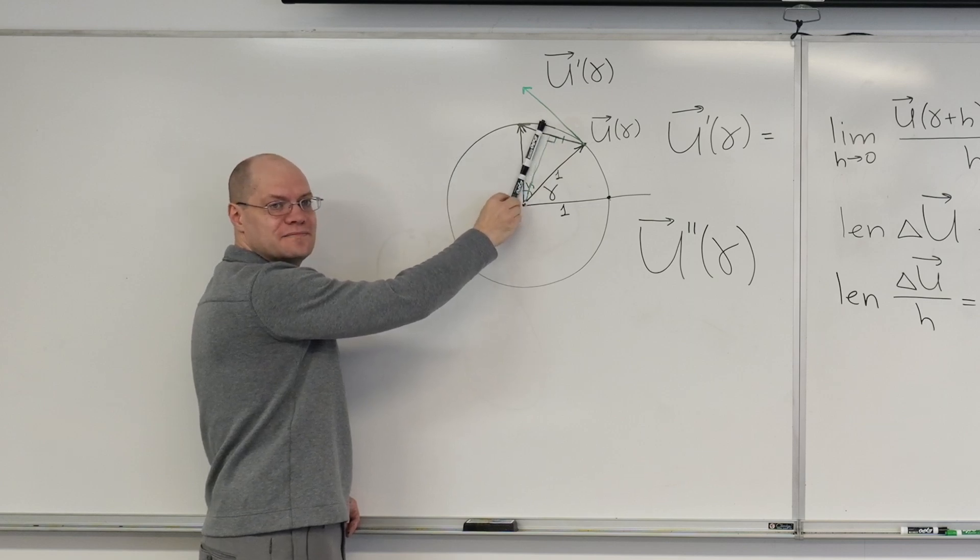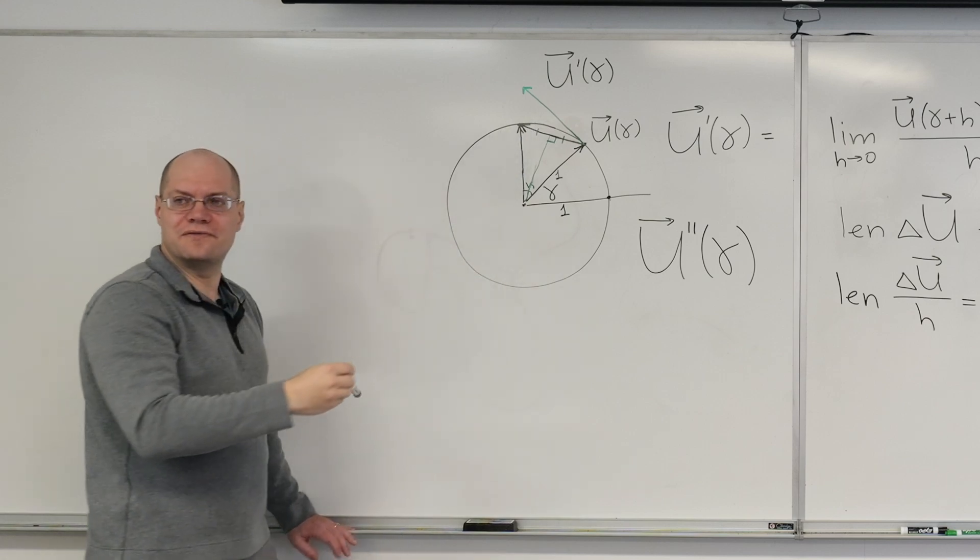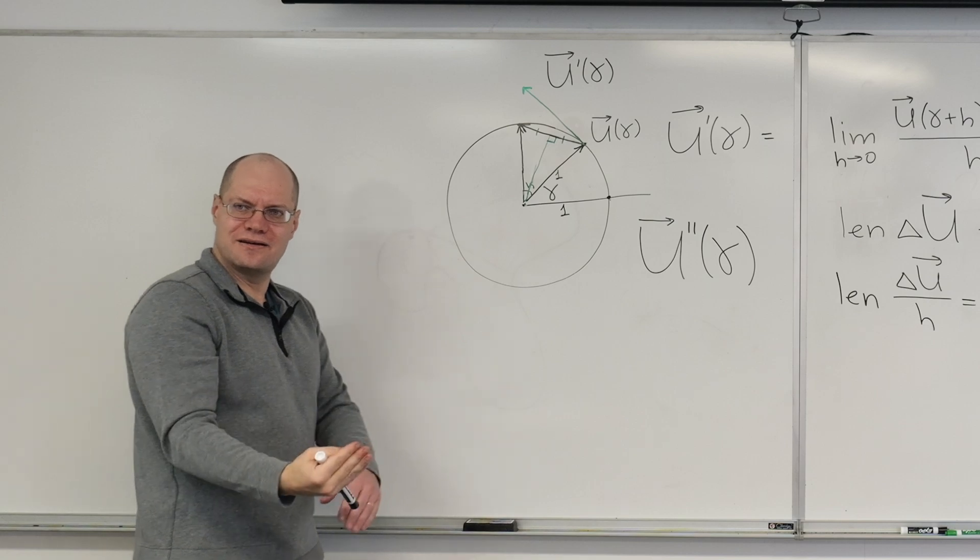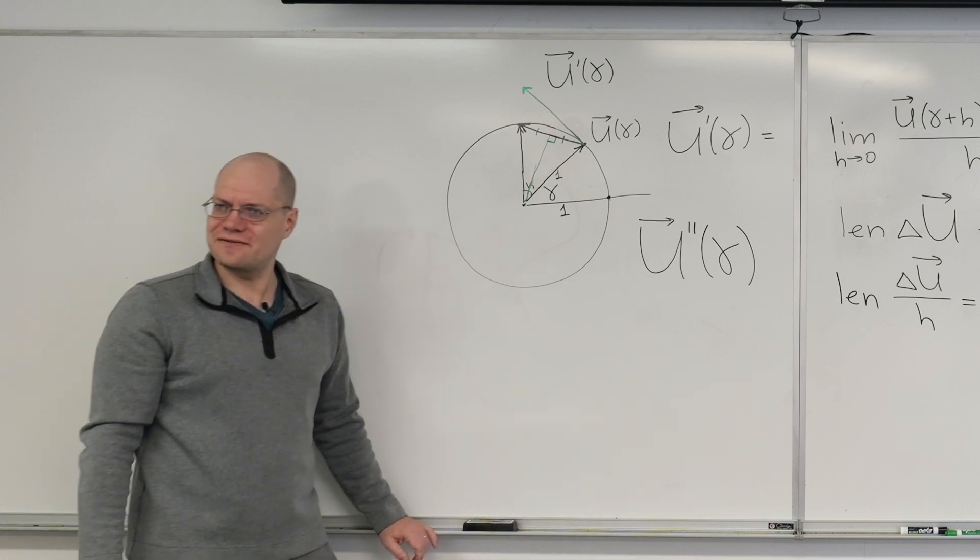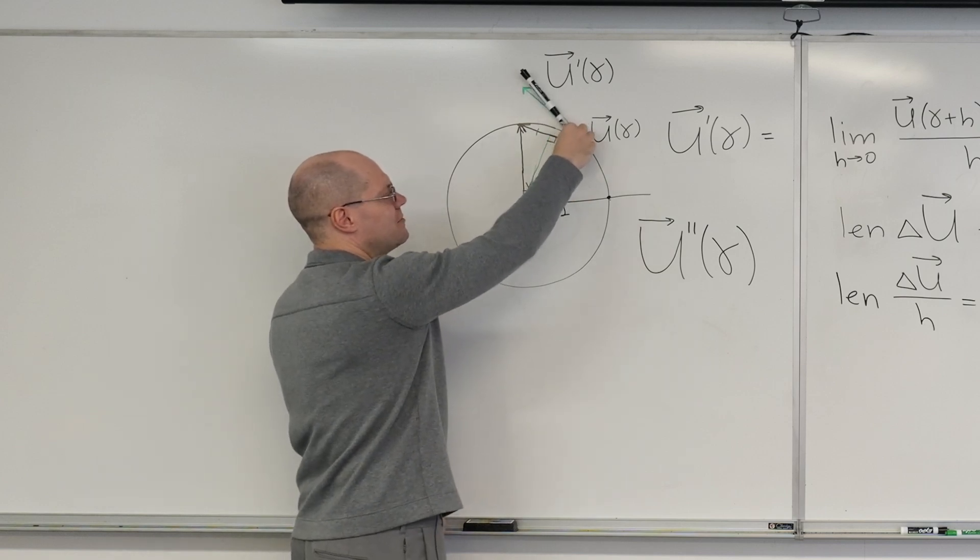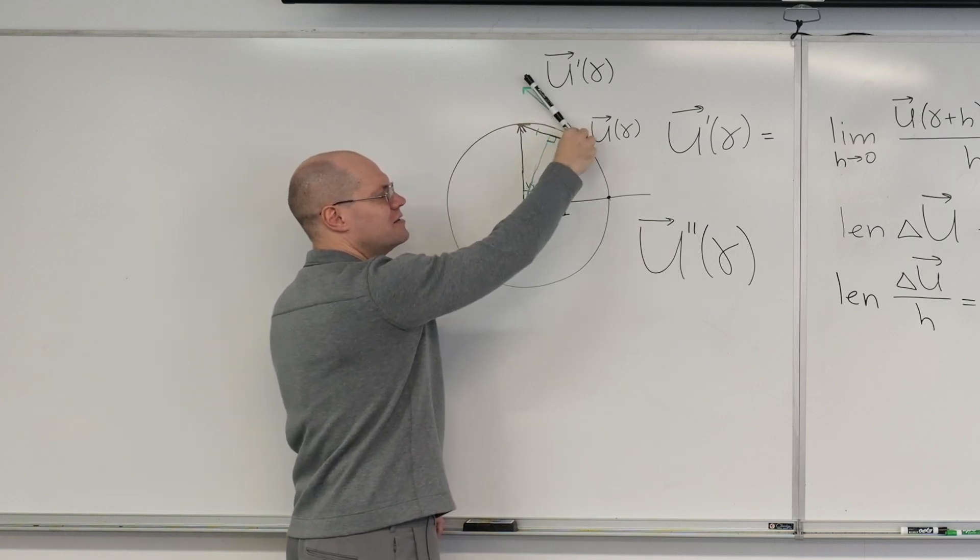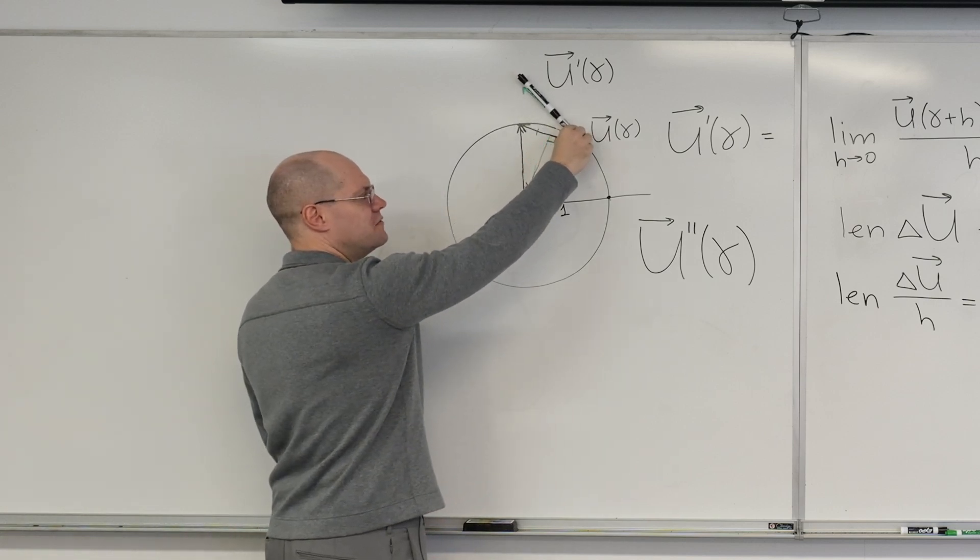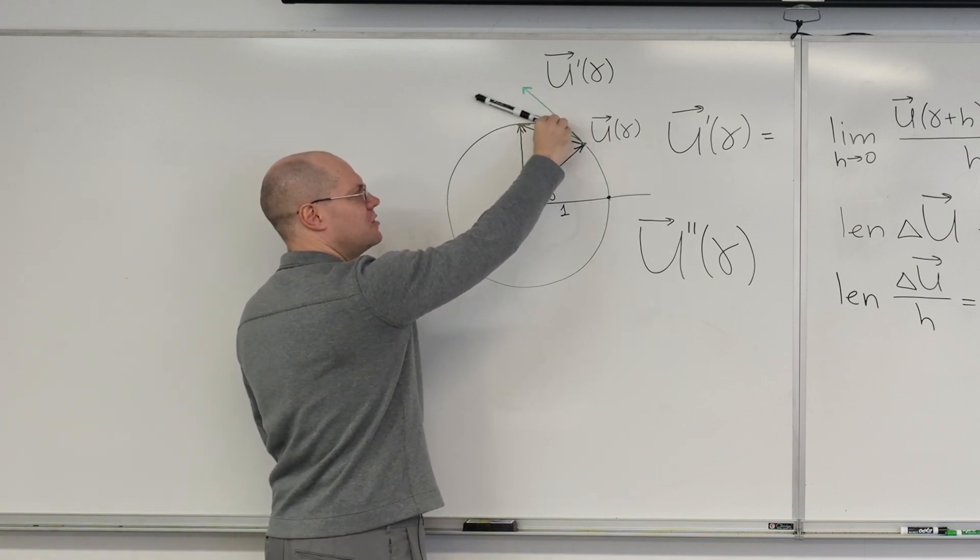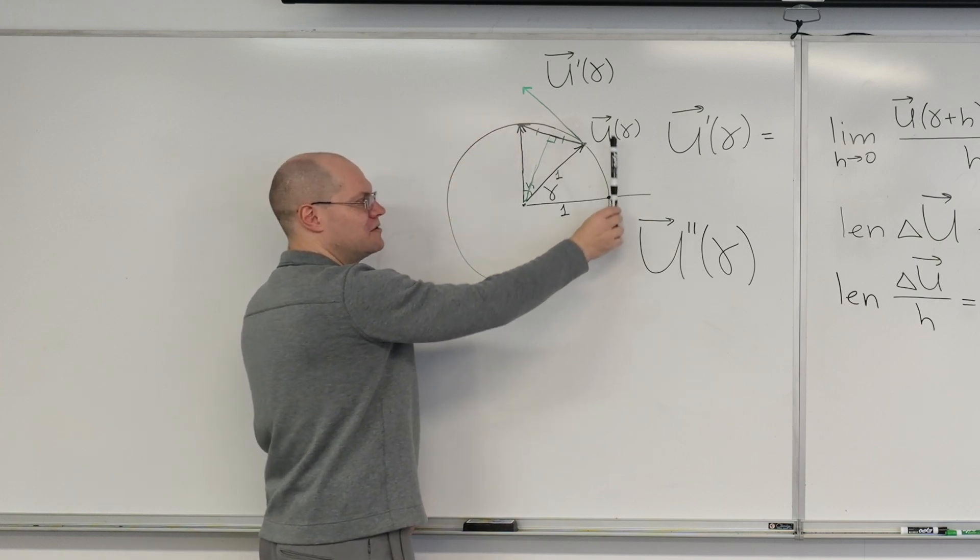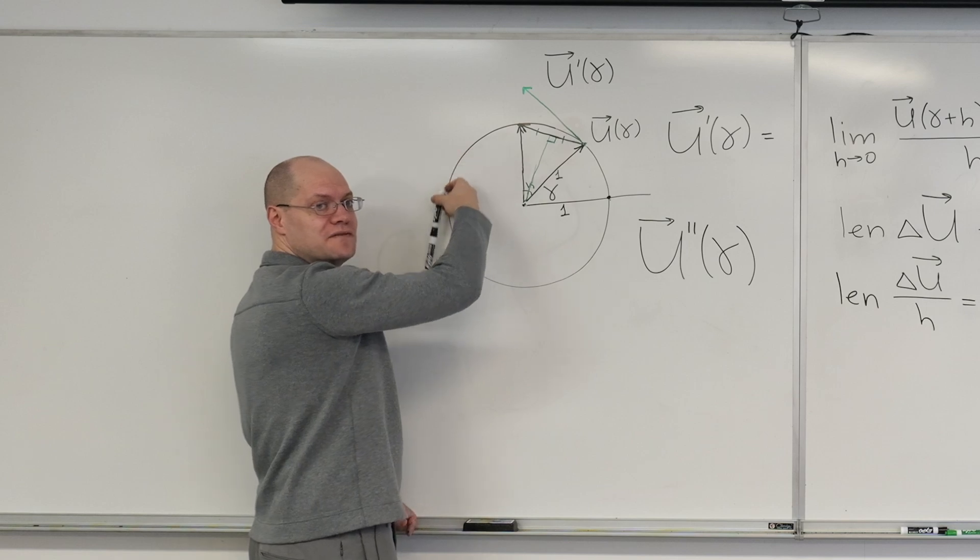So its derivative will be orthogonal to it in the turn left kind of sense. So if this is U prime of gamma, we're not even putting it, right? So let me clarify that a little bit. U prime of gamma, the way we're visualizing it right now, goes like this. But remember that whenever we do any sorts of calculations with vectors, we put them at the arbitrary origin.